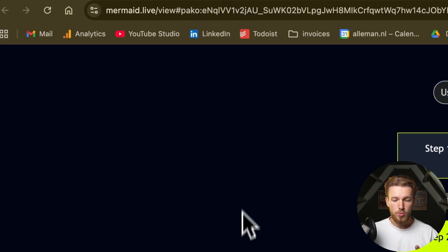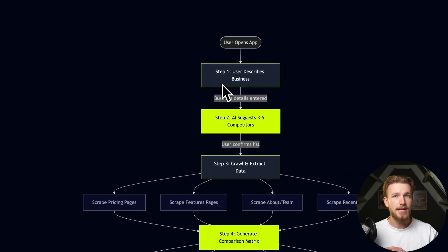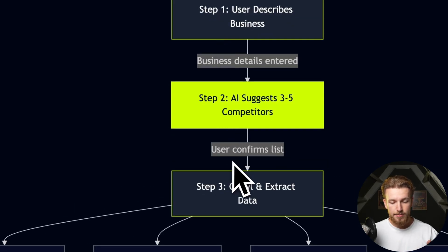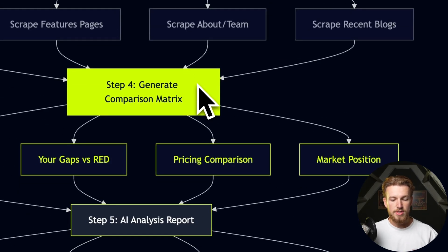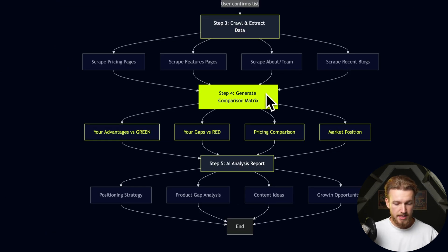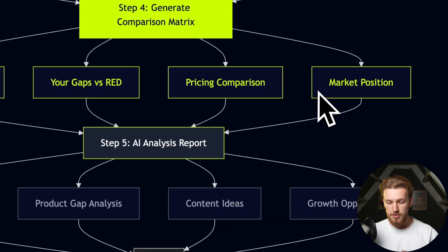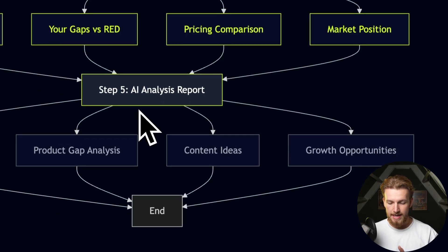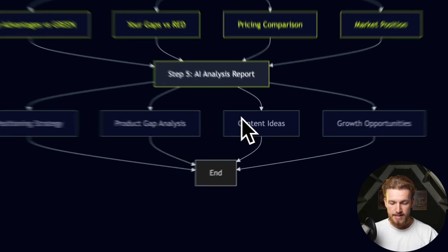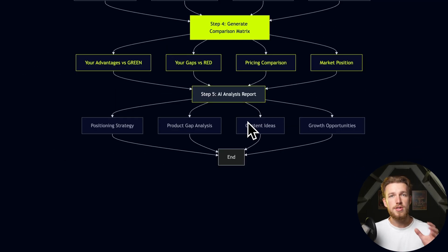The user opens the app and describes their business in plain text. Step two: we come up with competitors and get their URLs. Step three: we crawl their whole website for pricing pages, features, team info, and recent blog posts. Step four is the comparison matrix — our advantages, gaps, pricing comparison, and market position. Step five is an AI analysis report with strategy, product gap analysis, content ideas, and growth opportunities.